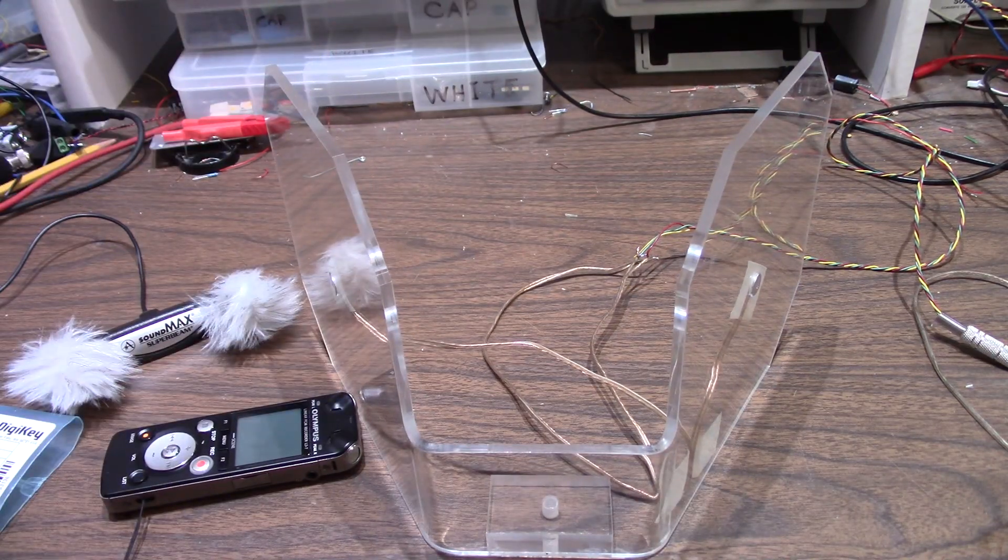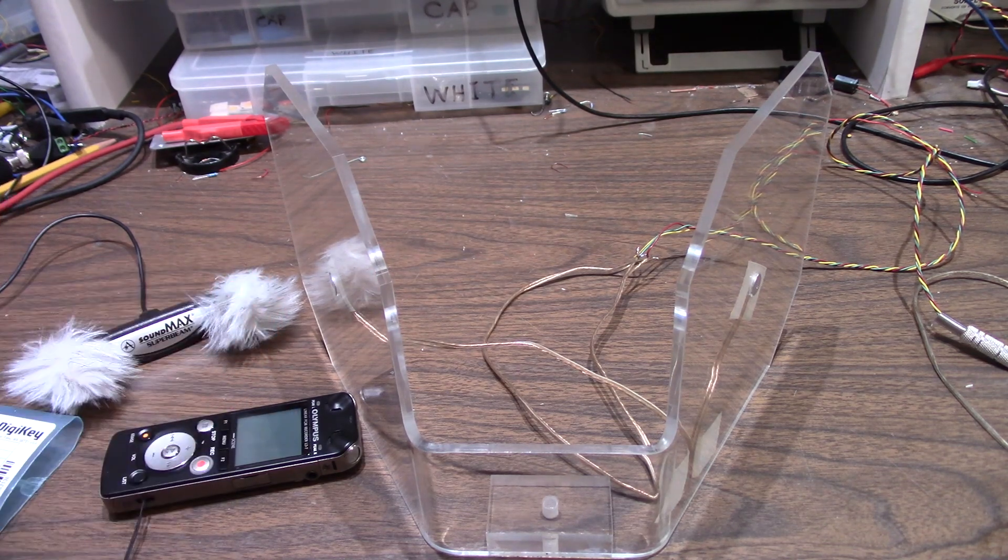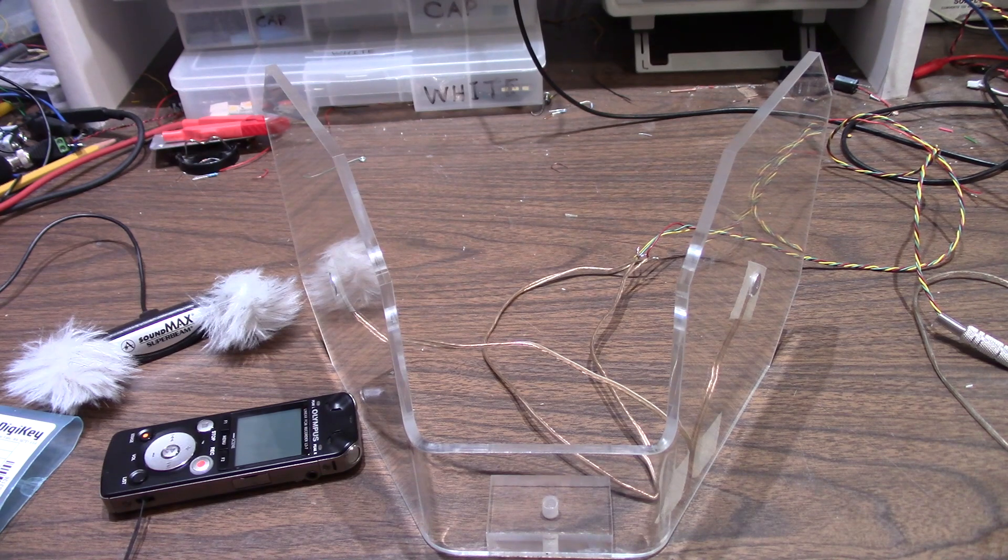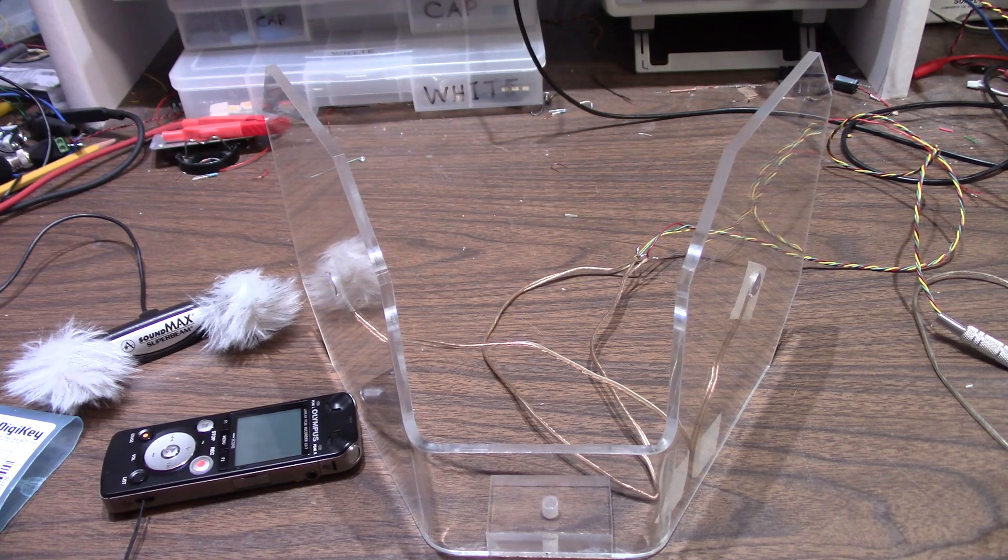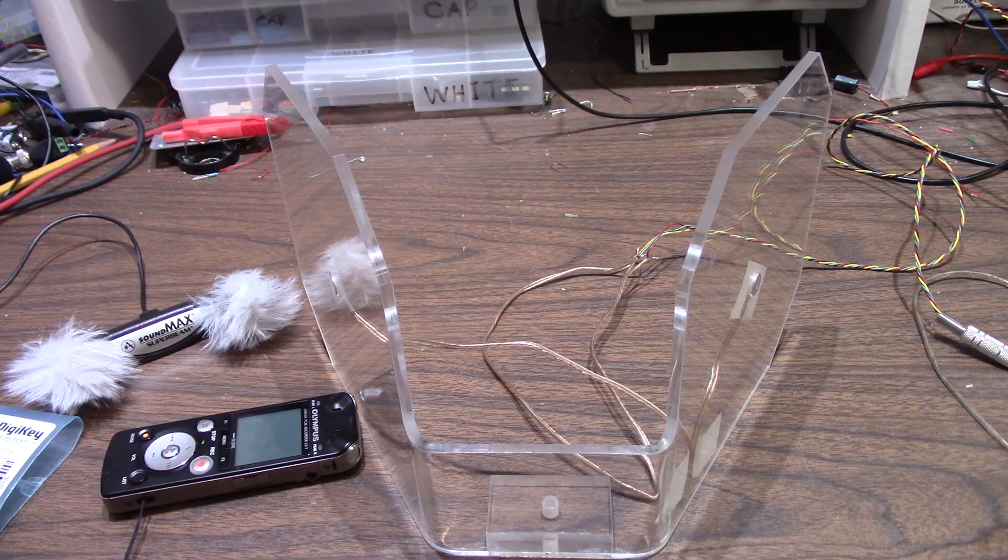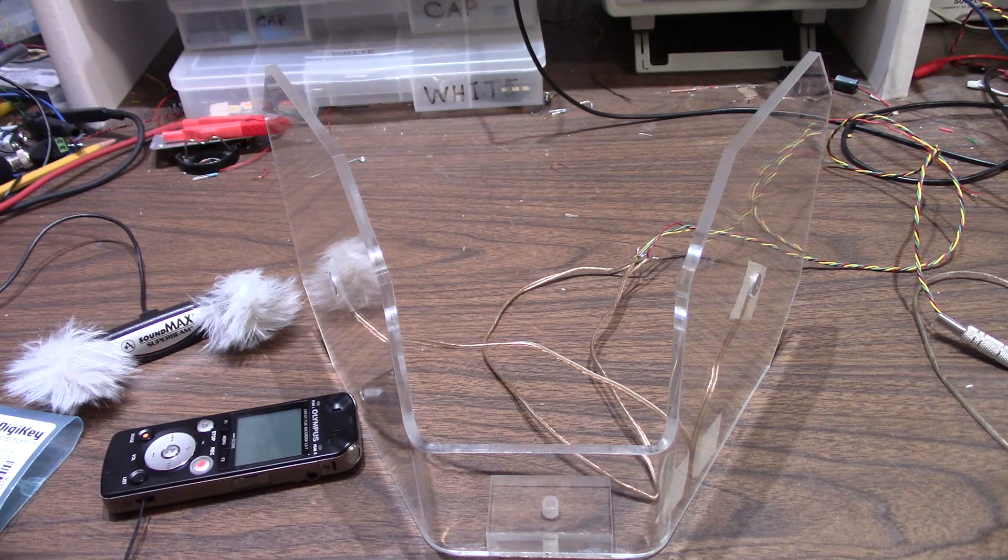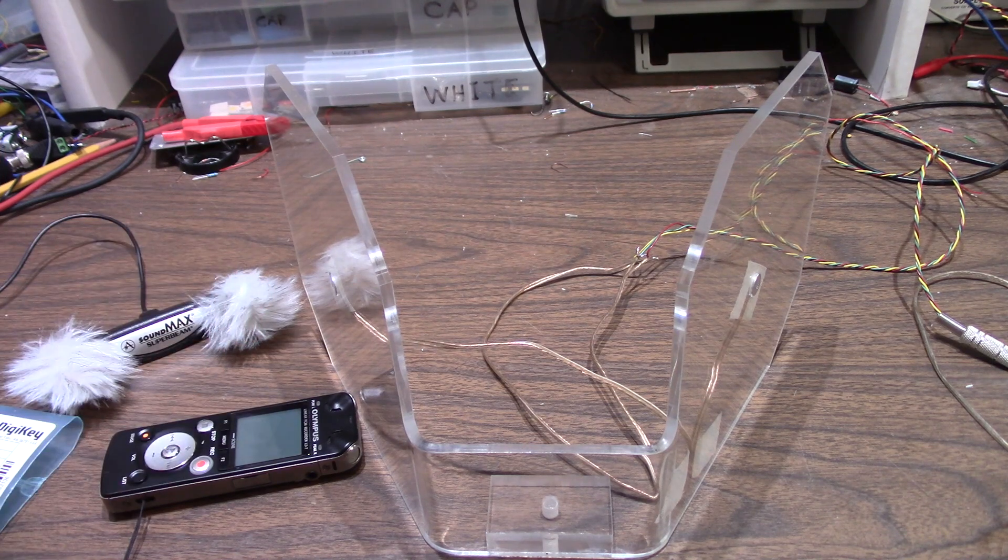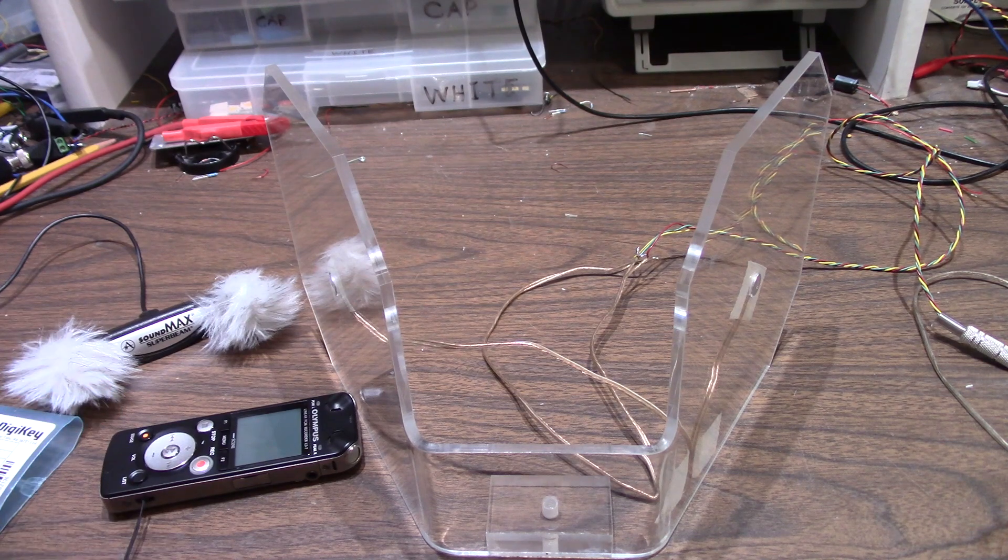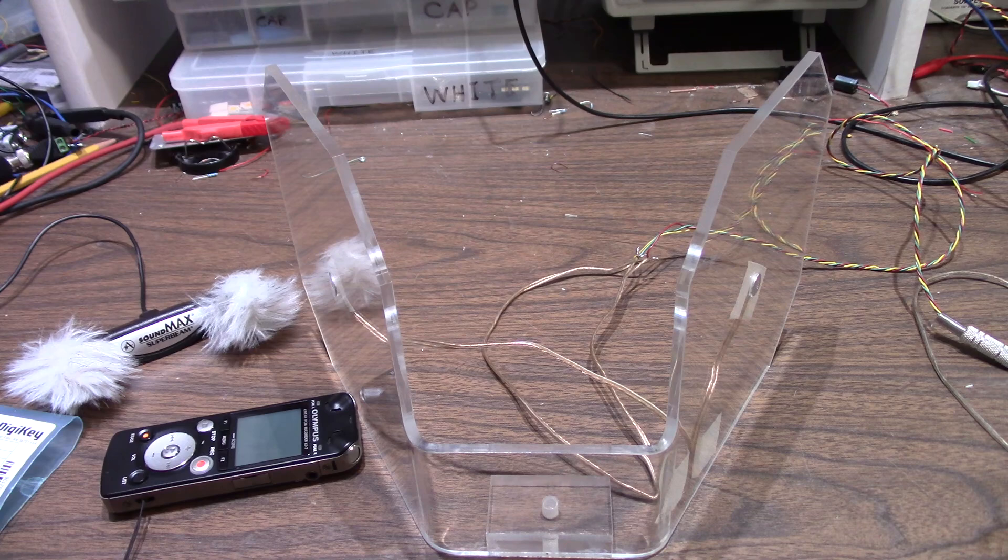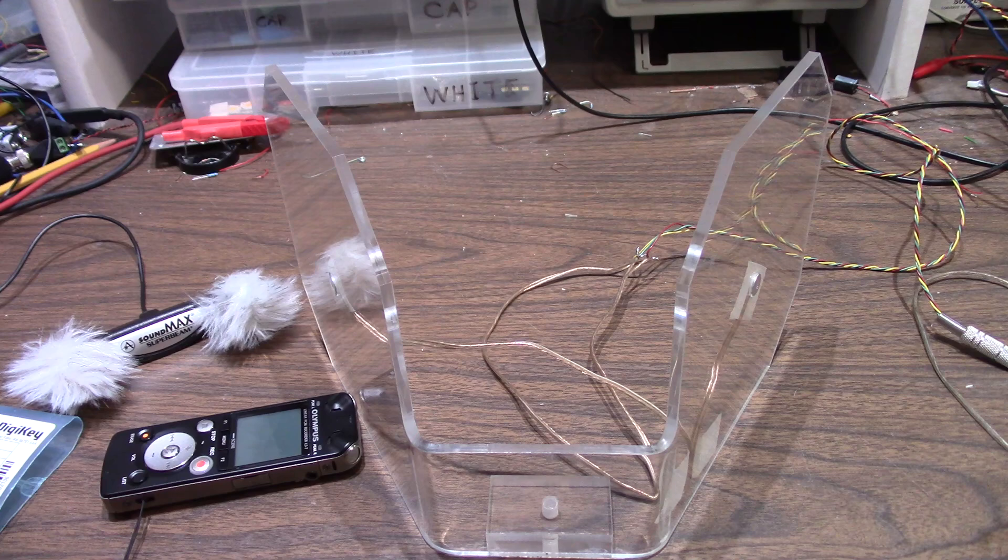You might be saying, why don't I try some cardioid type pattern capsules. They do make those and I am going to buy some and play with them. But the big deal with those, they have poor low frequency response. Because the mics have what are known as a transfer function. And changing the transfer function from omnidirectional or isotropic means you're affecting the frequency response as well.